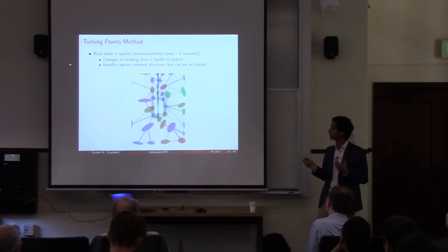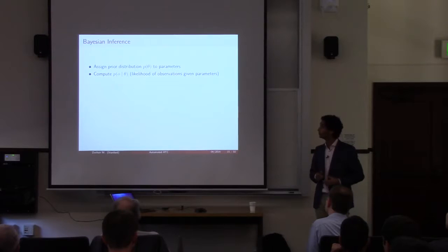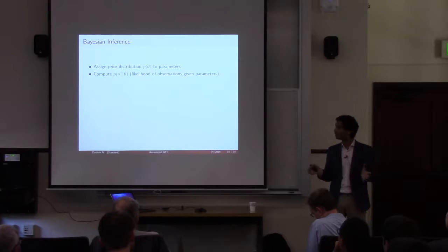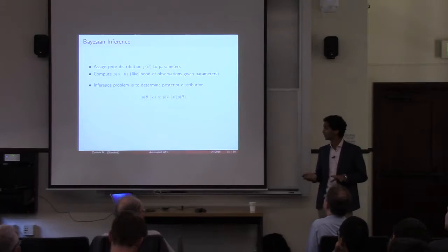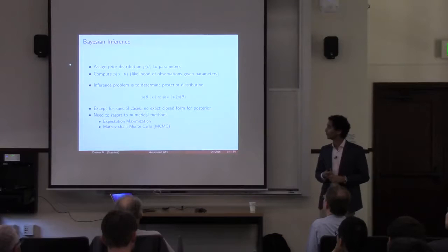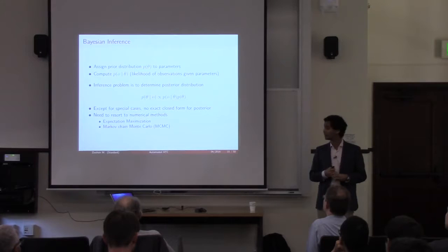The idea is that the parameters describing our model, if we put a prior distribution on them and compute the likelihood of observations given those parameters, we can use Bayes' rule to flip it and compute the posterior of the parameters given the observations. In reality, except for very special cases, you can't find these in closed form, so you resort to numerical methods — whether expectation maximization or Markov chain Monte Carlo.